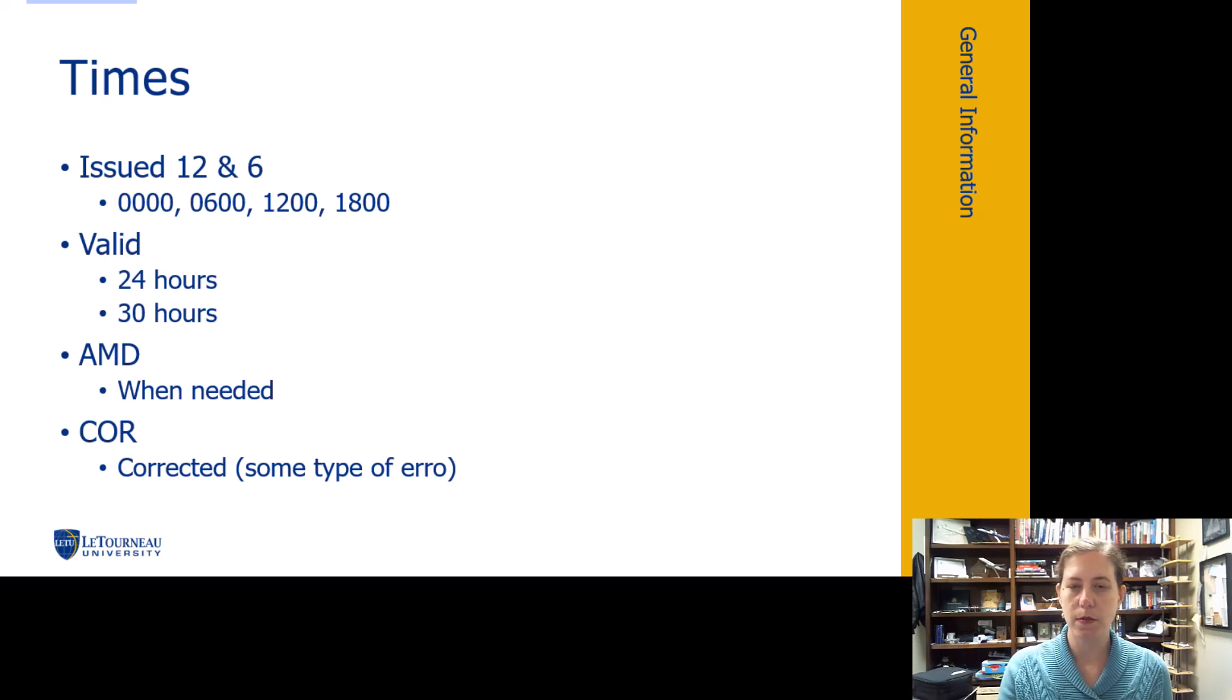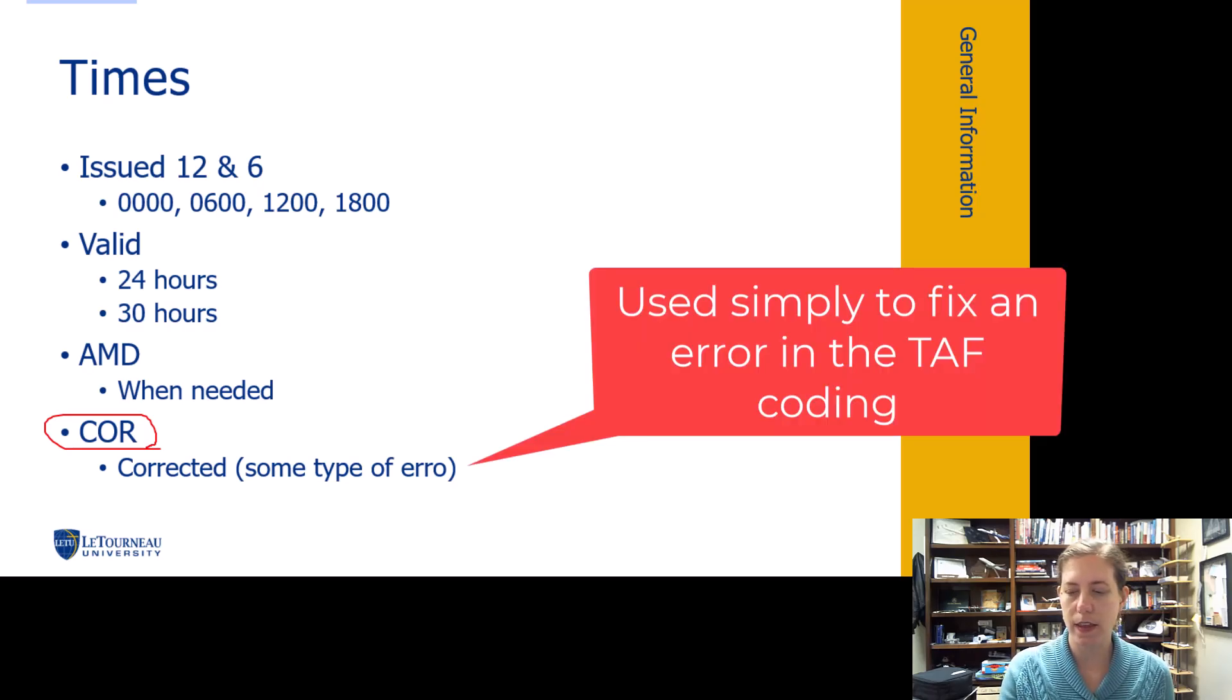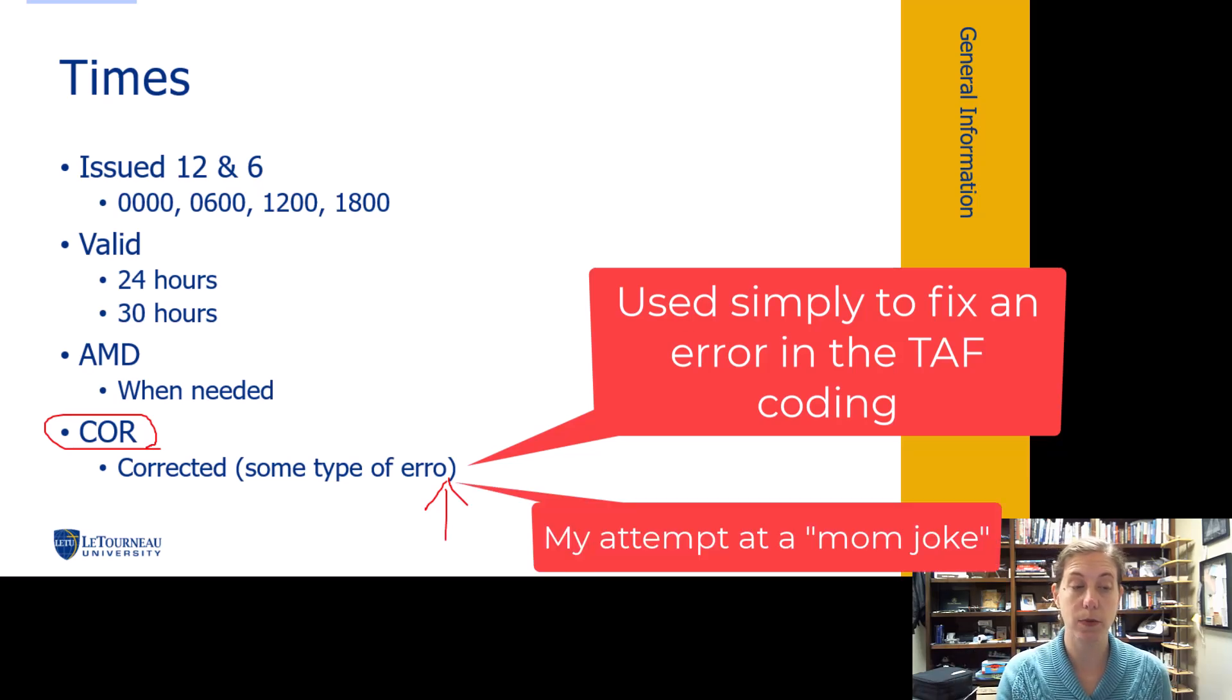Then the last thing we sometimes see more rarely is corrections. So that's not that the forecast was having a problem or it was incorrect. It is that they had an error, spot the error right there, right? So they had some kind of typo in the TAF when they issued it. So watch out for those.